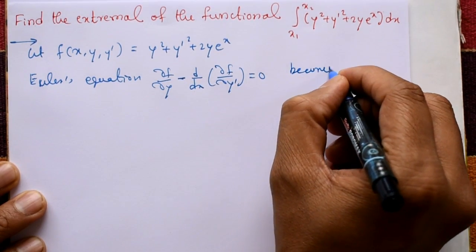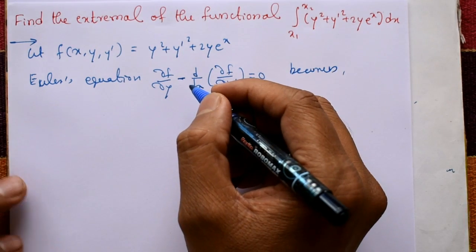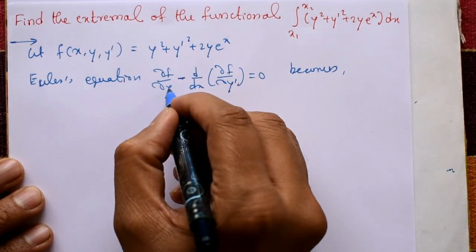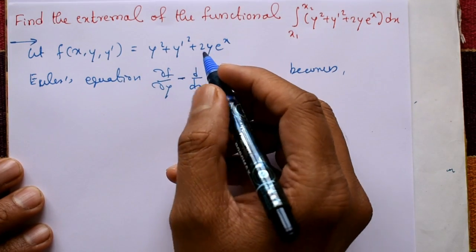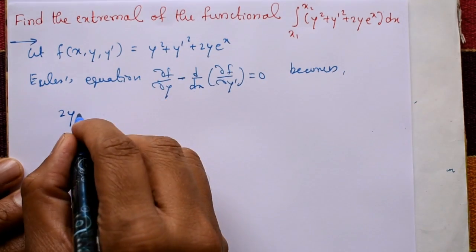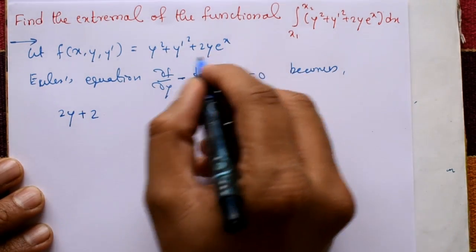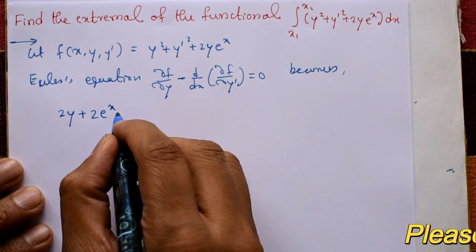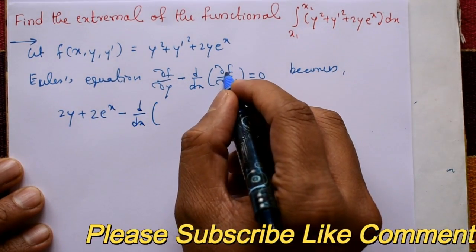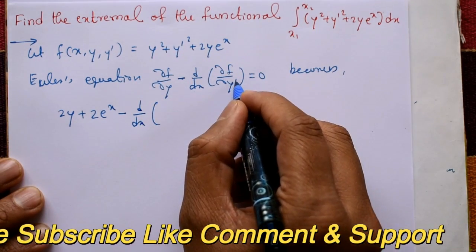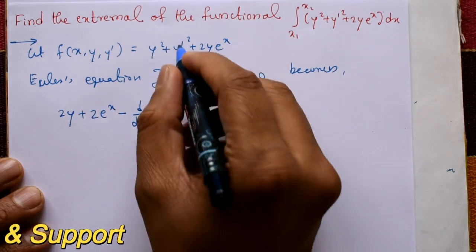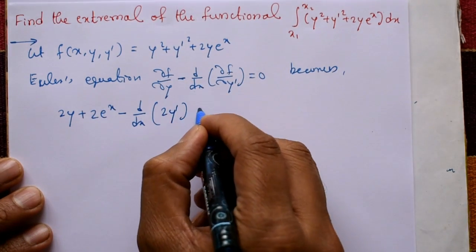This equation becomes: differentiate f with respect to y, treating y' as constant, giving 2y plus 2eˣ. Then minus d/dx of the partial derivative with respect to y': differentiating with respect to y' gives 2y', so we have minus d/dx of 2y' equals 0.